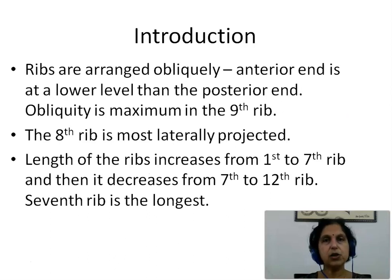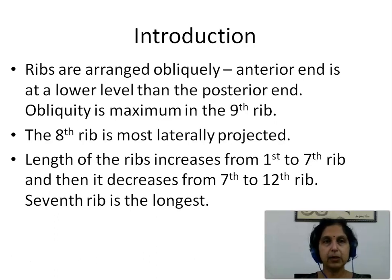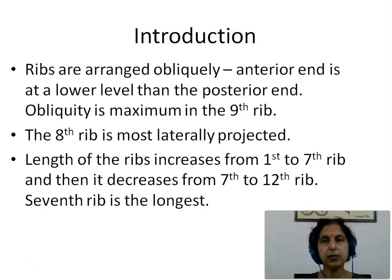Ribs are arranged obliquely. The anterior end of a particular rib is at a lower level as compared to the posterior end, thus making the rib oblique. The obliquity is maximum in the 9th rib. The 8th rib is most laterally projected. Length of the ribs increases from the 1st to the 7th rib and then decreases from the 7th to the 12th rib, thus the 7th rib is the longest.